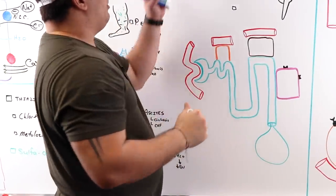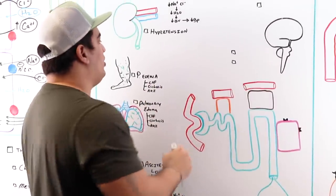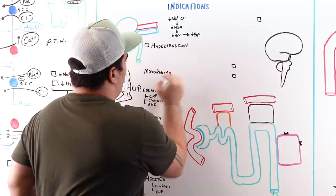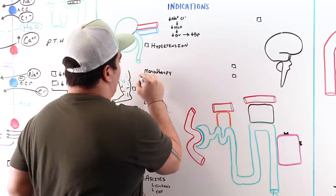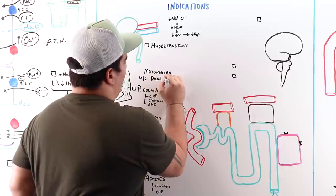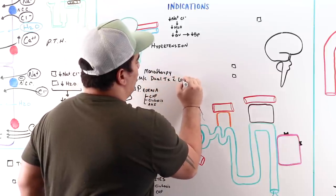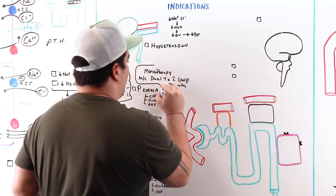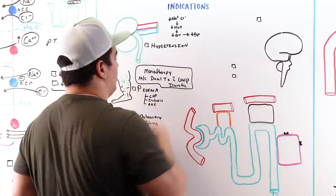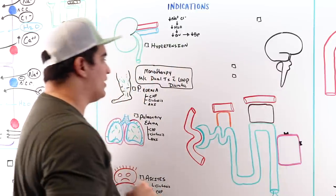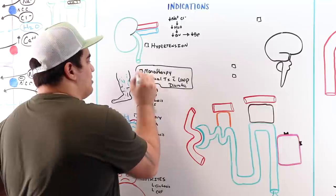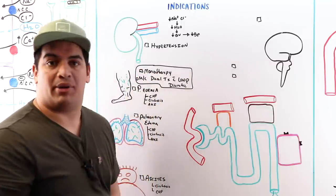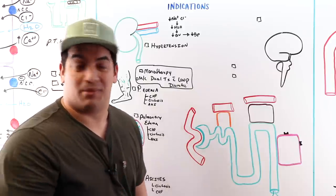In summary for edematous states: thiazides can be utilized as monotherapy (less common) or more commonly as dual therapy with a loop diuretic like furosemide in situations of pulmonary edema, peripheral edema, or ascites.